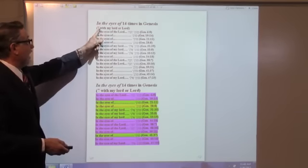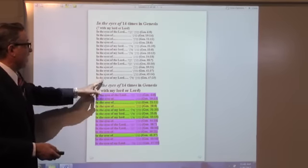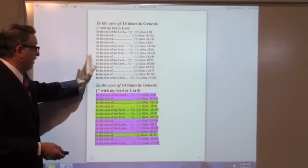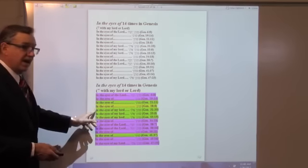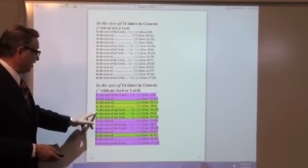In the eyes of, double heptatic meter, appears 14 times with my Lord seven and seven. According to color coding, it has three authors.